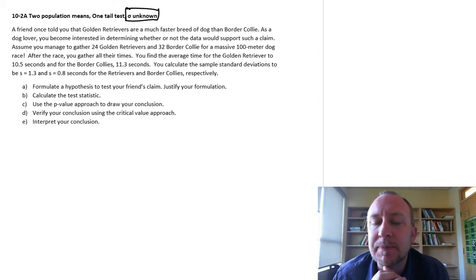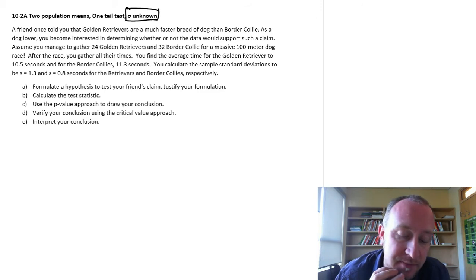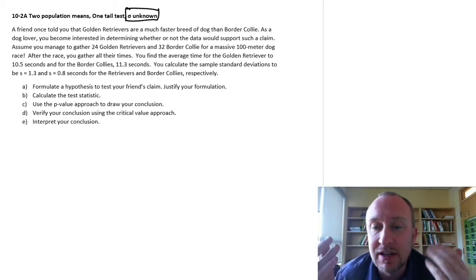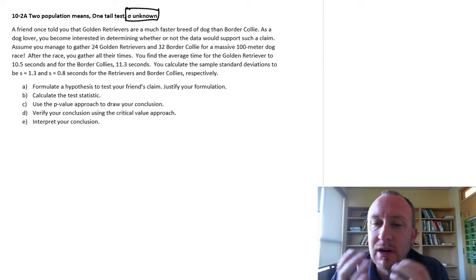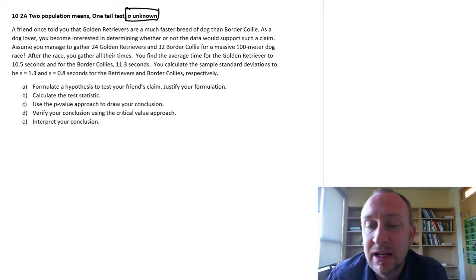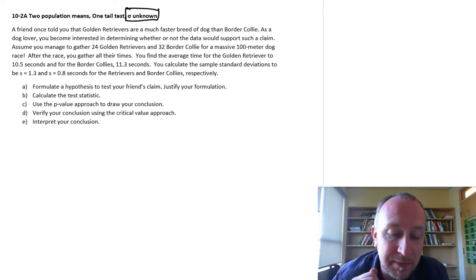Similar to using the t-distribution when we are only working with a single population, here again we have to deal with these degrees of freedom. Now unlike working with one population there's two different formulas that we're going to be needing, well one of two formulas that we'll be needing for degrees of freedom in this case.